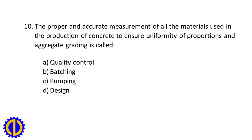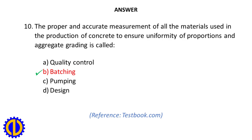Question 10. The proper and accurate measurement of all the materials used in the production of concrete to ensure uniformity of proportions and aggregate grading is called: A. Quality Control. B. Batching. C. Pumping. D. Design. Answer: B. Batching. Reference: Testbook.com.